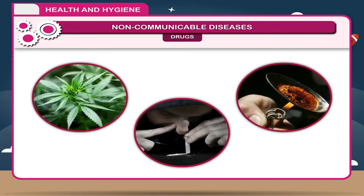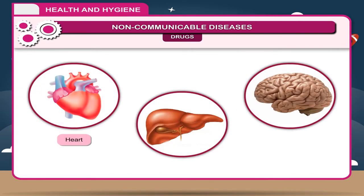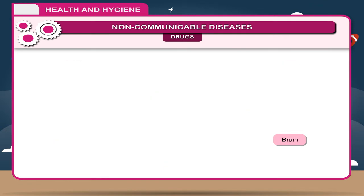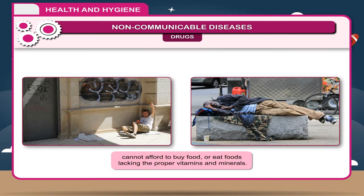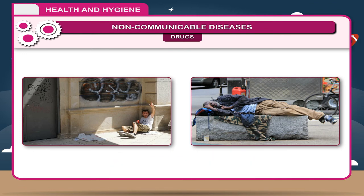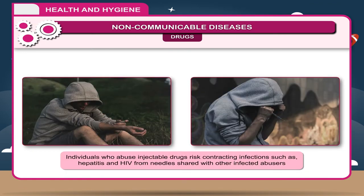Drug abuse can cause a wide variety of adverse physical reactions. Long-term use of drugs may damage the heart, liver and brain. Drug abusers may suffer from malnutrition if they habitually forget to eat, cannot afford to buy food, or eat foods lacking proper vitamins and minerals. Individuals who abuse injectable drugs risk contracting infections such as hepatitis and HIV from needles shared with other infected abusers.